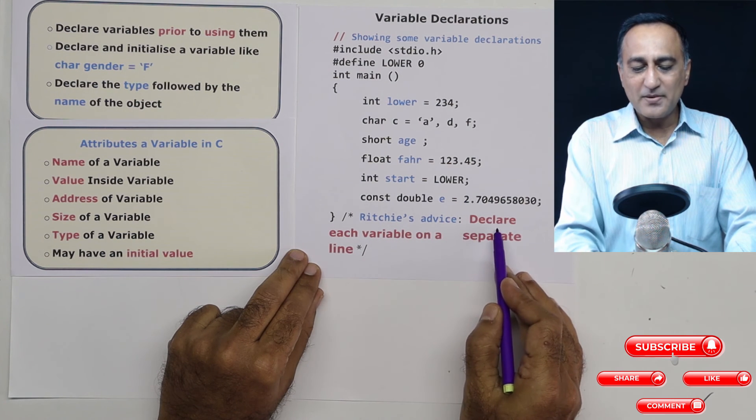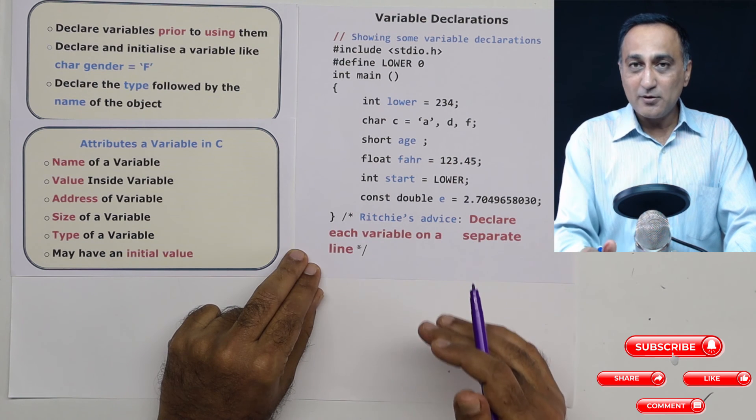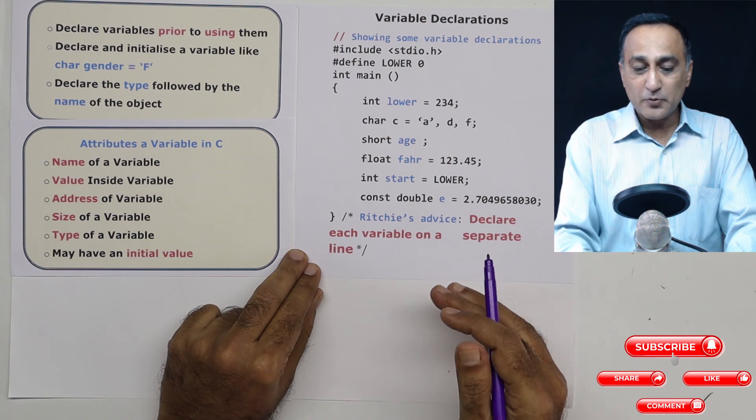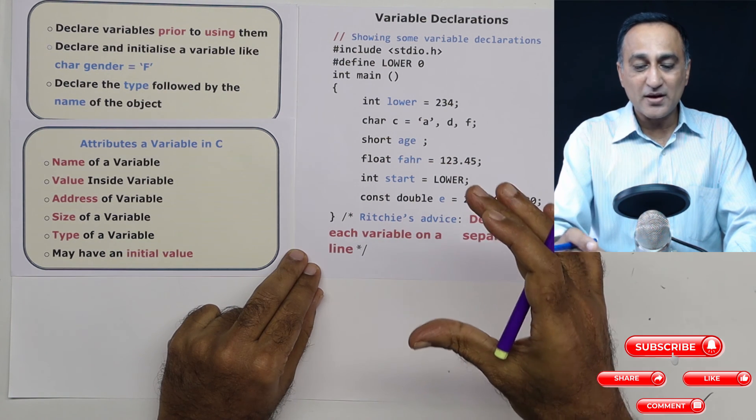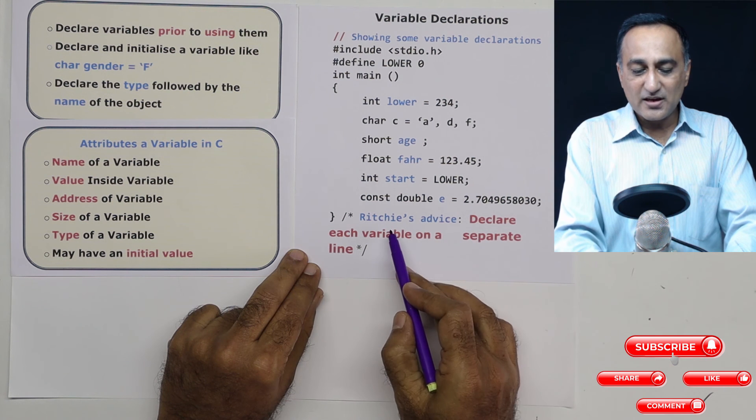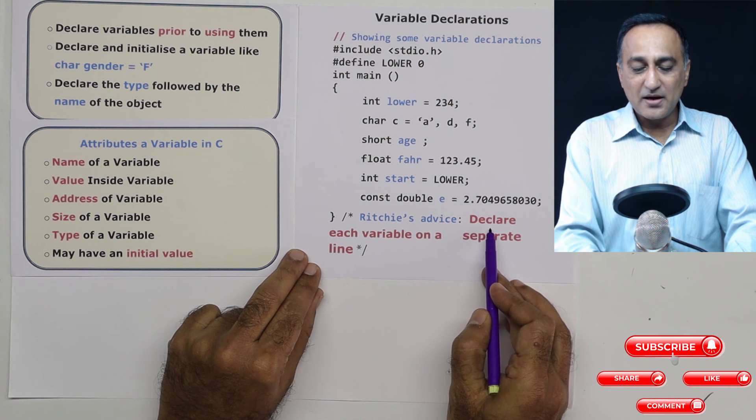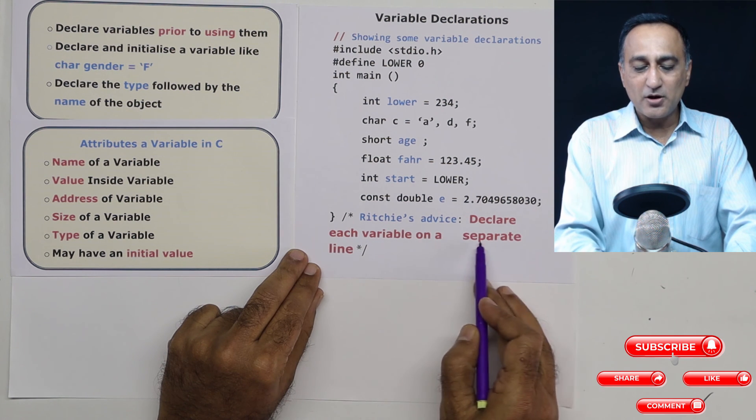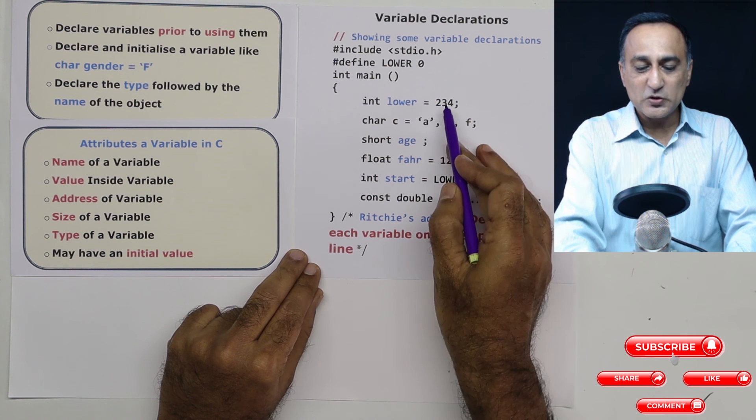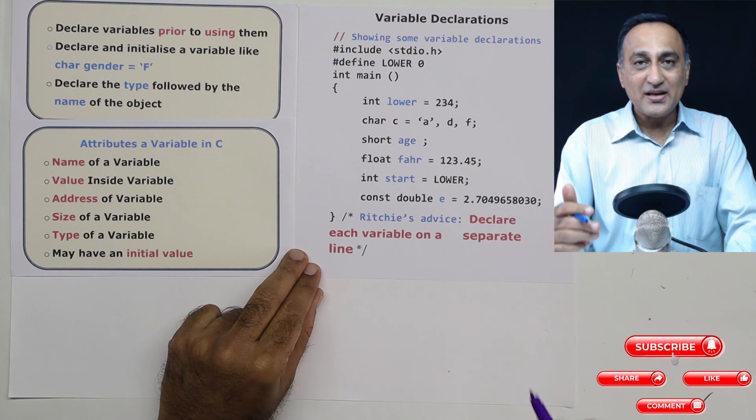This is a very important advice from Dennis Ritchie. Although I may not be able to follow it, but I'm writing the program because of space requirements so that you can see more clearly. But his advice is excellent. Make an effort to declare each variable on a separate line. This way, the program becomes very readable.